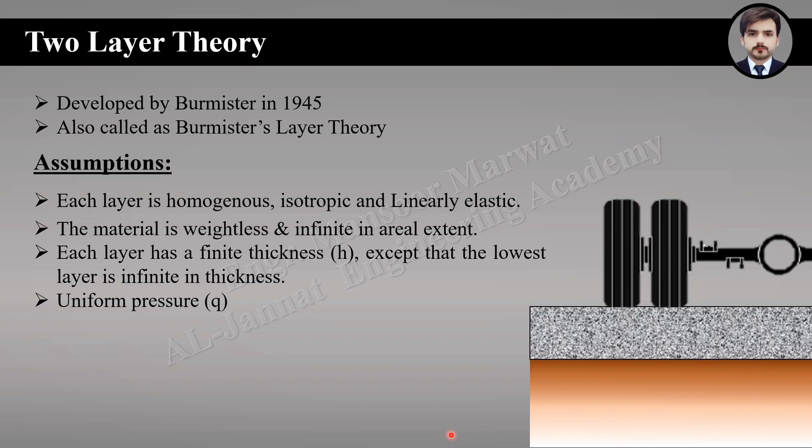Why was the two-layer theory developed? As we know, flexible pavements are a layer system having better material on top. The elastic modulus of HMA is greater than that of the base, and the base is greater than the sub-base, and so on. Each layer has different properties, so it can't be represented by a homogeneous mass. That's why, for the solution of such a layer system, Burmister developed a theory in 1945, hence called the Burmister layer theory.